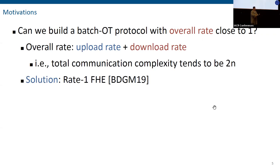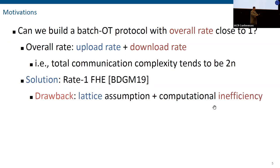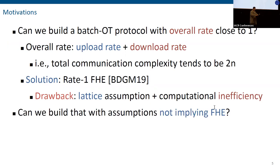It's natural to ask, can we build a Batch-OT protocol with optimal rate? Here, optimal rate means both upload rate and download rate are close to one. In other words, the total communication complexity tends to be two times N, where N is the number of bits you transferred. The straightforward solution is to use rate-1 FHE. For an N-bit ciphertext, it conveys roughly N-bit message. But there are a few drawbacks. First, it requires lattice assumption. Second, it's not computationally efficient due to the bootstrap mechanism used.